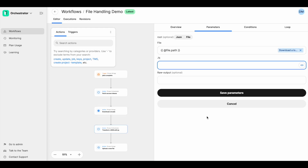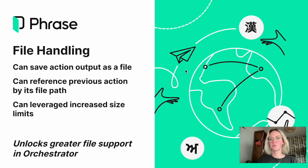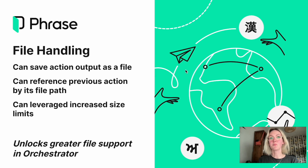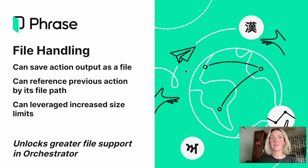You can then type in whichever JQ you want to perform across that file content that's being received from download a locale. It's that simple. File handling is something we're really excited to have released for Orchestrator — this is something that's been in high demand and we hope you're as excited as we are. With file handling, it unlocks greater file support as part of your workflow. You won't be limited by file size anymore and you'll even see extended actions that you can now use as part of your workflow.